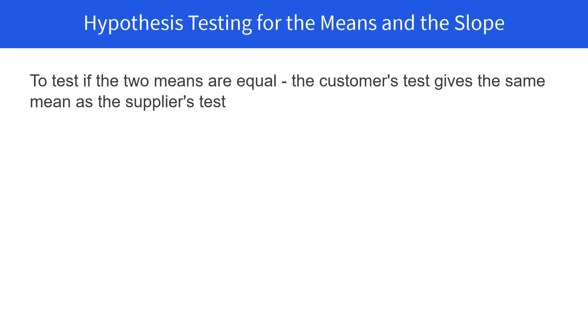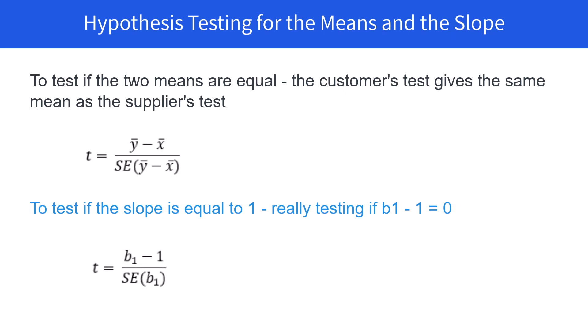We can actually test if the two means are equal. That is, is the customer's test the same mean as the supplier test using this t statistic? And we can also test if the slope is equal to 1 using this t statistic, which is equal to B1 minus 1 divided by the standard error of the slope.